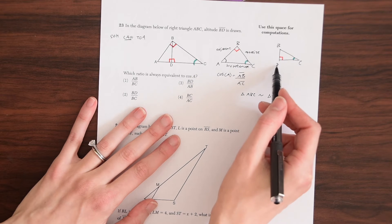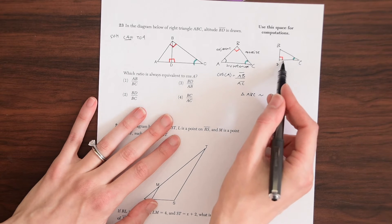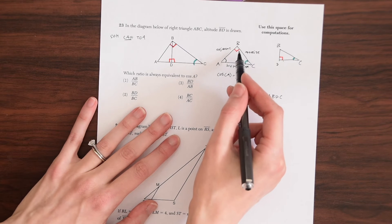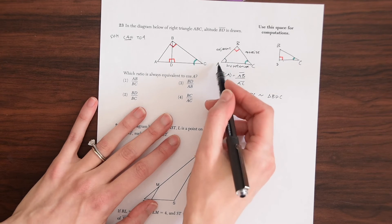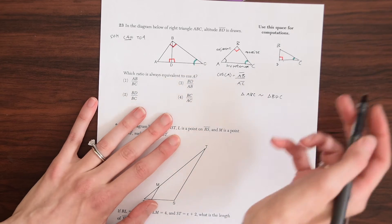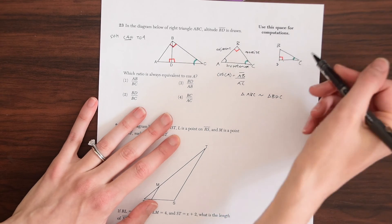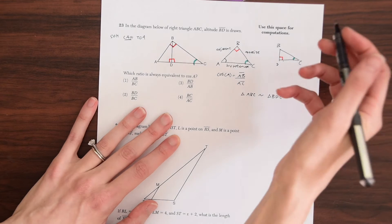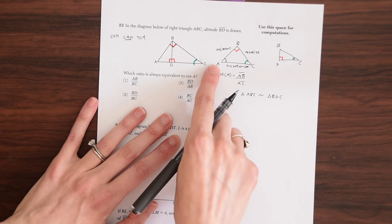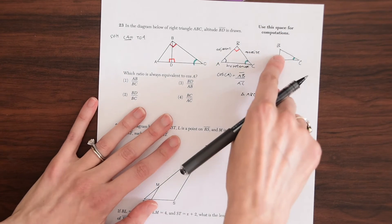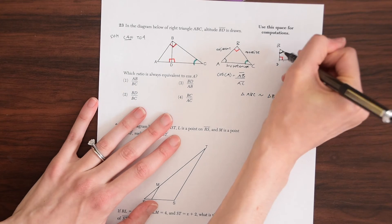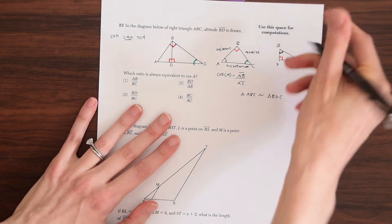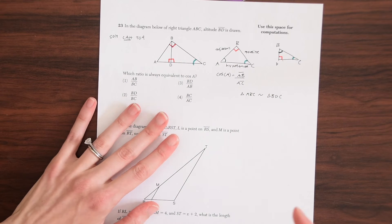So we have angle C corresponds to angle C. That makes sense. Angle D is that 90 degree angle corresponds to angle B, that 90 degree angle. And then notice we have an angle A over here, and we have an angle B over here, which is like the last remaining angle. So actually angle A in this triangle is going to correspond to angle B in this triangle. So this is kind of like our old angle A in the other triangle.